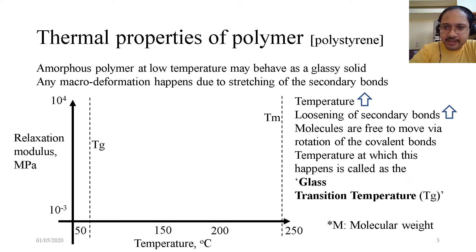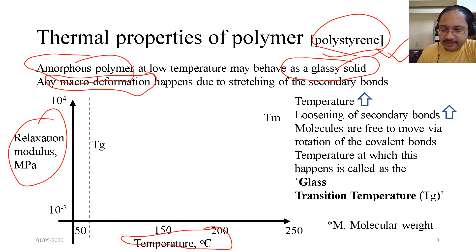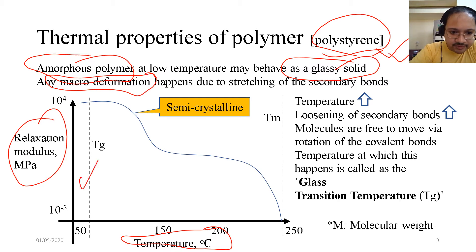Thermal properties of polymer. In this case we will look into polystyrene. Amorphous polymer at low temperature may behave as glassy solid. Any macro deformation happens due to stretching of the secondary bonds. That means the secondary bonds which are present in the amorphous polymer, if they are loaded, stretched, or deformed, then we do see macro deformation.